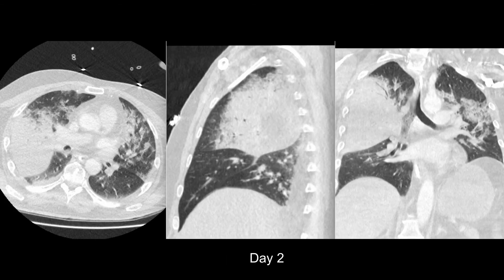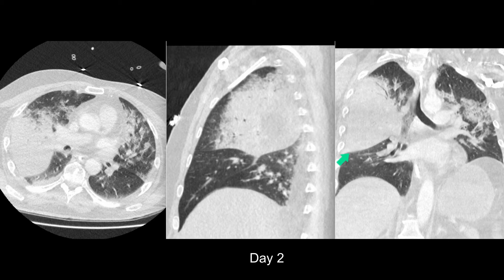A CT scan of this patient shows a bulging oblique fissure. The horizontal fissure isn't bulging, but may well have been bulging on the earlier chest radiographs. On the axial image, you can see that the oblique fissure is located posterior to the left oblique fissure, indicating that there's a bulging process. And here on the coronal, you can see the bulging of the oblique fissure.